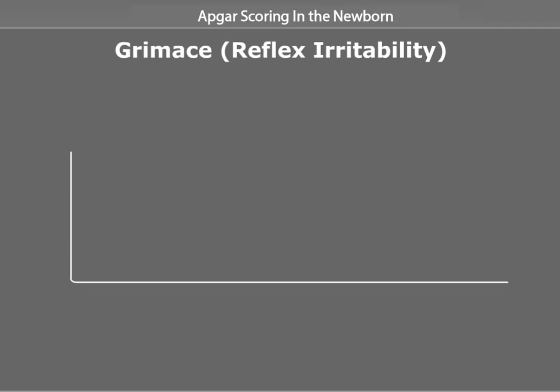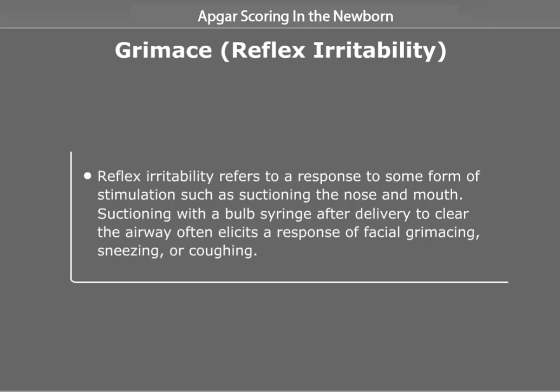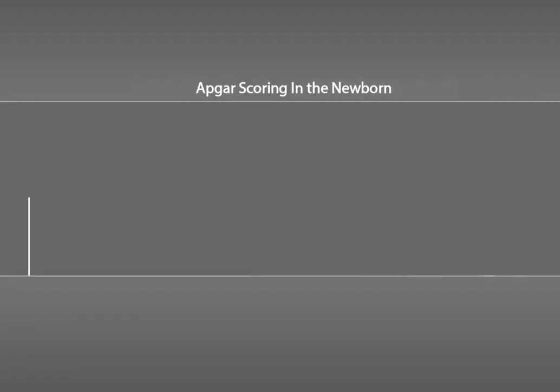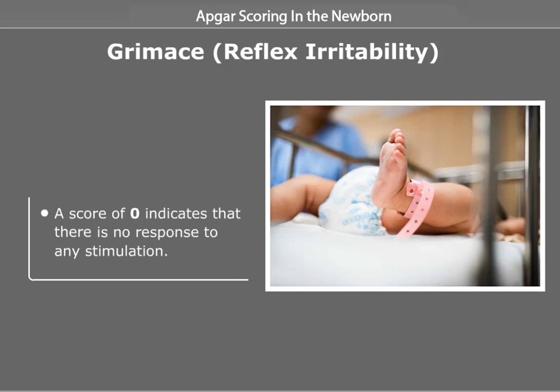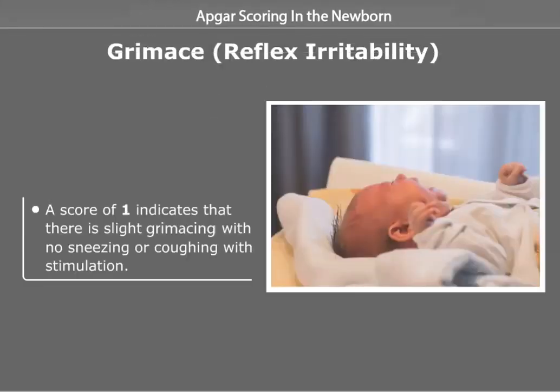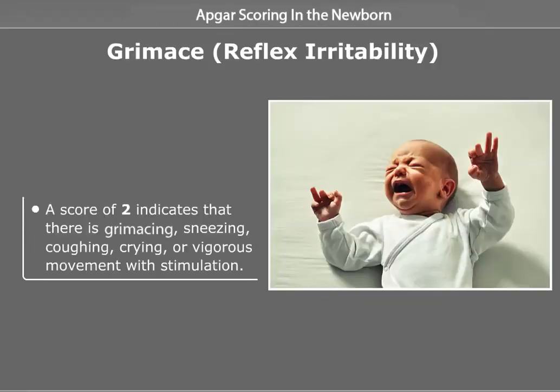Reflex Irritability refers to a response to some form of stimulation such as suctioning the nose and mouth. Suctioning with a bulb syringe after delivery to clear the airway often elicits a response of facial grimacing, sneezing, or coughing. A score of 0 indicates no response to any stimulation. A score of 1 indicates slight grimacing with no sneezing or coughing. A score of 2 indicates grimacing, sneezing, coughing, crying, or vigorous movement with stimulation.